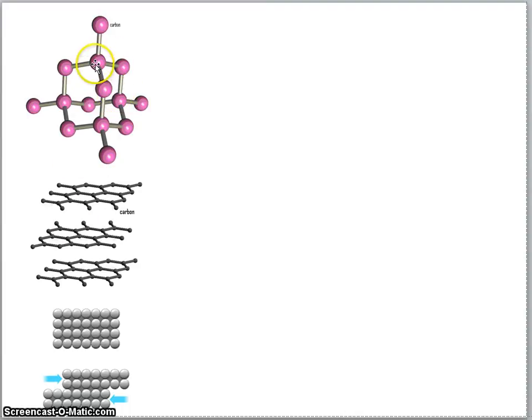If we look superficially at the difference between the structures, the balls here indicate the carbon atoms. You can see that each carbon is bonded to one, two, three, four other carbons, whereas here we can see each carbon is only bonded to three other carbons. This is the main reason we have these major differences in properties - because of this difference between the bonding.